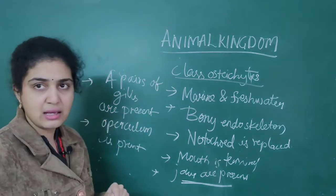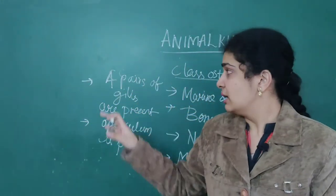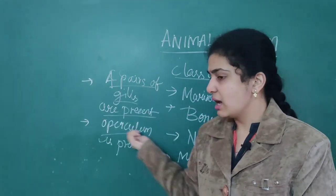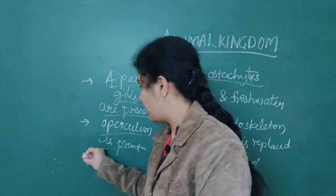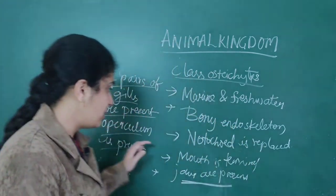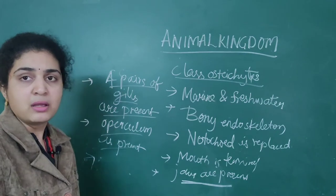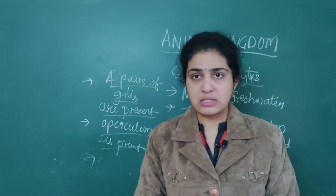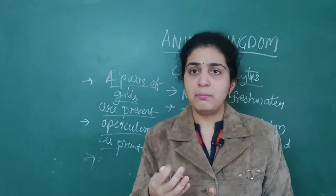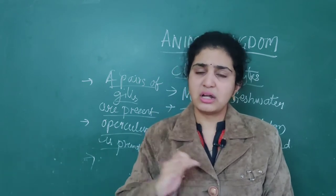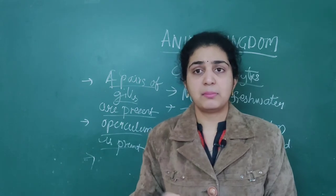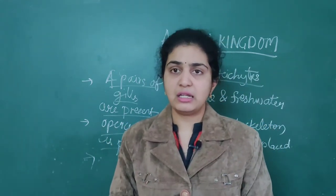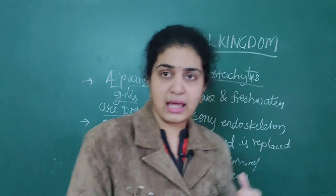Four pairs of gills are present along with an operculum. The air bladder is also present in Osteichthyes, which means these organisms do not need to swim continuously. In Chondrichthyes, air bladder is absent so they must swim continuously or they will sink. But for Osteichthyes, the air bladder is present, so they can take rest whenever they want. They can maintain their buoyancy without constant swimming.